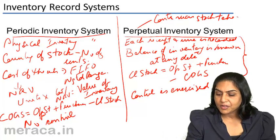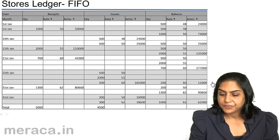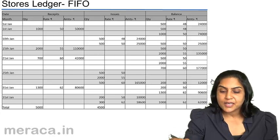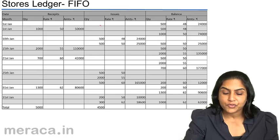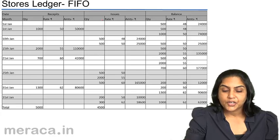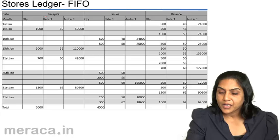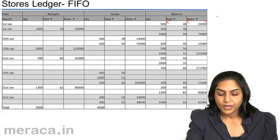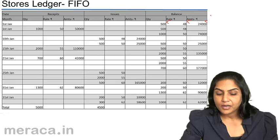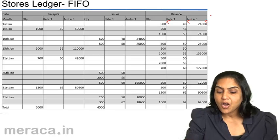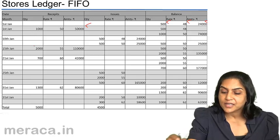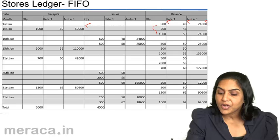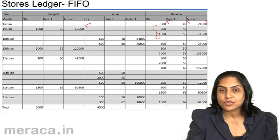Let us see the format of a store's ledger to understand how control is exercised. This is a store's ledger maintained under the FIFO system. Continuing with our earlier example, on 1st January there was an opening stock of 500 units at a cost of $48, therefore a balance of $24,000. On 1st January itself, there was another purchase of 1,000 units, and as a result the closing balance consisted of 500 units at the rate of $48 and 1,000 units at the rate of $50.